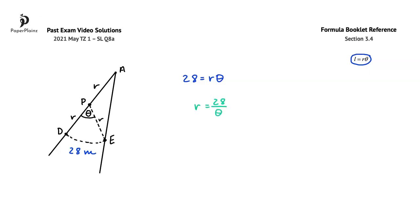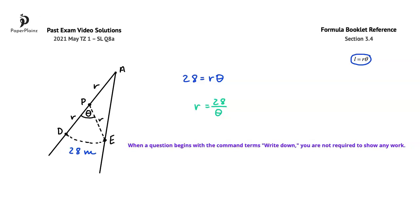An exam taking tip to take away from here is a reminder that when a question begins with the common term 'write down', you are not required to show any work. Here, as our final answer, we can simply write down that R is equal to 28 over theta.